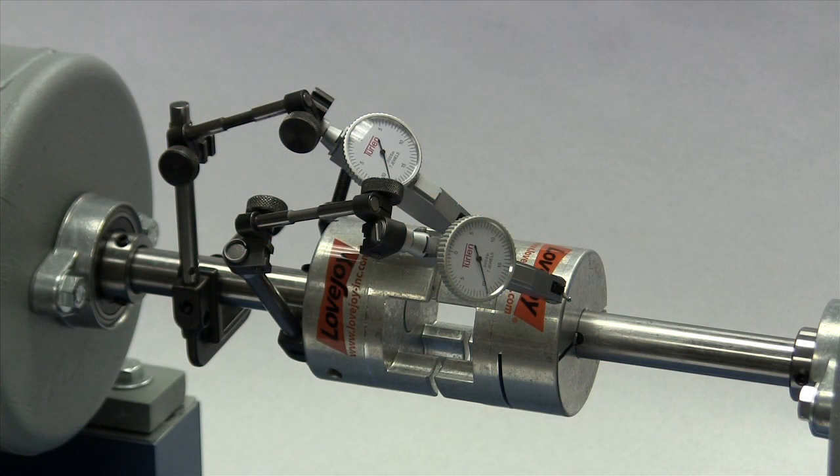If using a dial indicator, mount the indicator on the driver shaft with the sensor touching the hub on the opposite shaft.